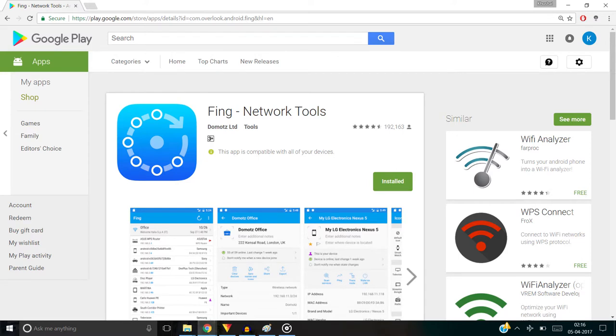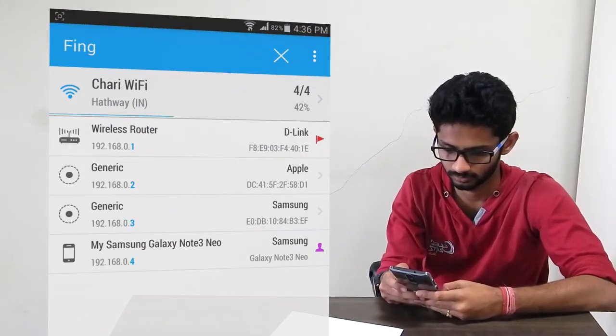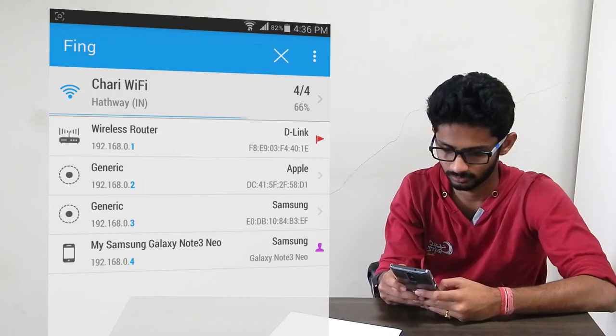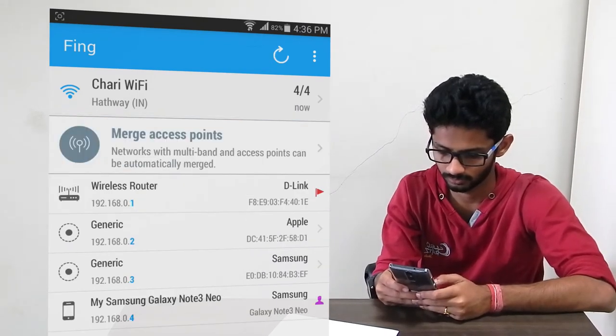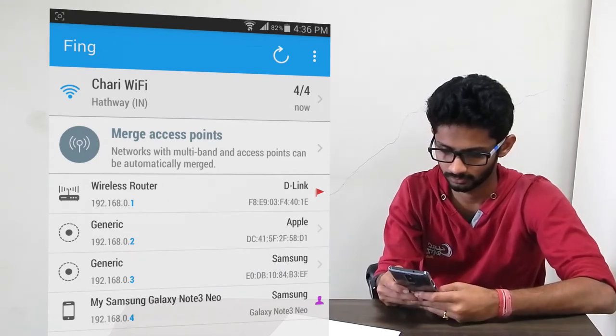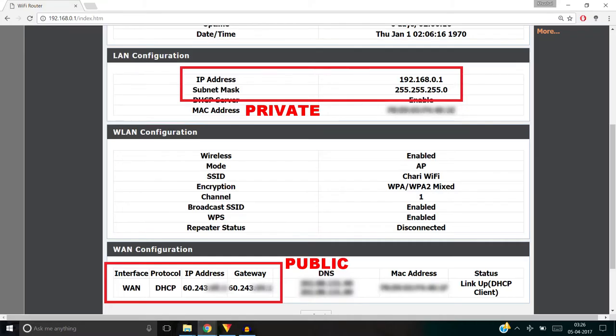To check our own public and private IP addresses, we first download Fing from the Play Store. This app can tell you all about your own LAN connection. Now, give it a couple of seconds, and it will show you all the IP addresses of all the devices connected to your LAN. Note that, the first address goes to the router. The router takes that address automatically. Now that you've seen the IP address of your router, just type it into Google Chrome or any other web browser that you like, and the configuration of your router opens up. The private IP address of your router is in the LAN section, and the public IP address of your router is in the WAN section.